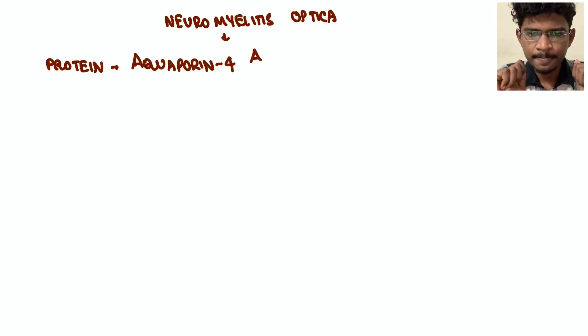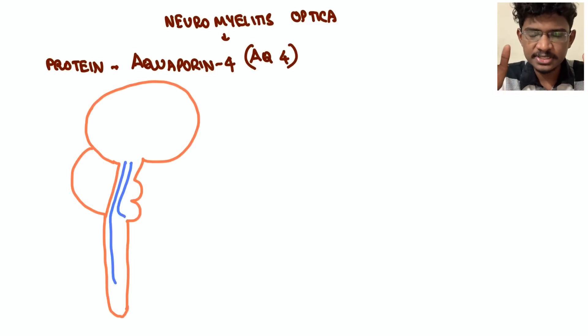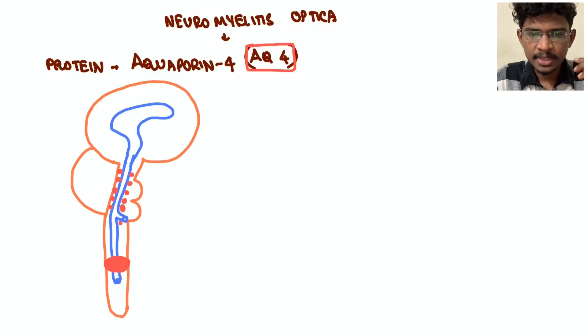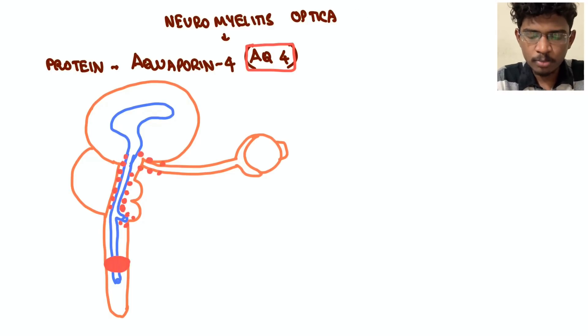Basic is there is a protein called aquaporin-4. Just remember the location of this protein, then you will know what's happening in this disease. This aquaporin-4 water channel is present densely in the spinal cord areas, then in the periaqueductal areas, meaning in the brainstem areas where there are loss of brain barriers, area postrema, those areas. Next, along the optic nerve - three areas.